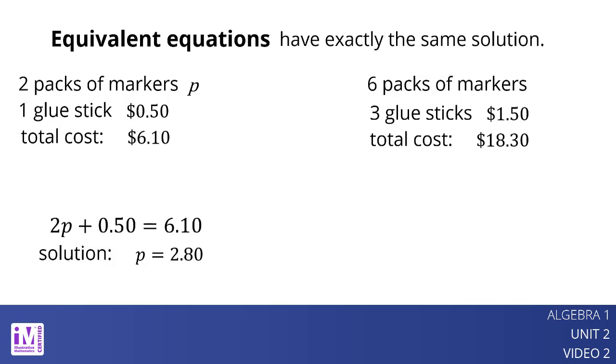Now suppose a friend bought six of the same packs of markers and three glue sticks for $1.50, and paid $18.30. The equation 6p plus 1.50 equals 18.30 represents this purchase.